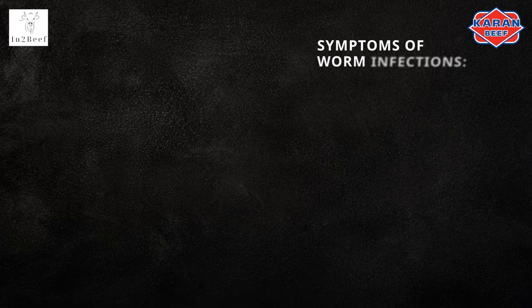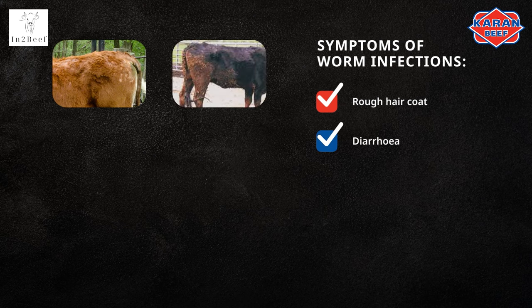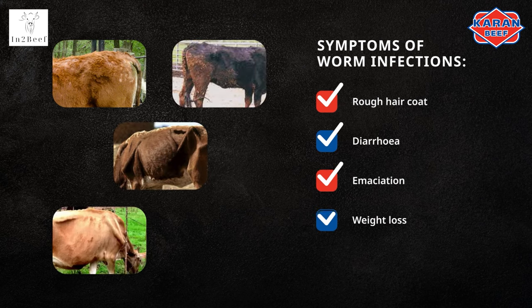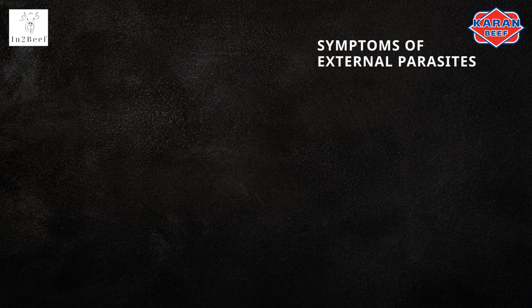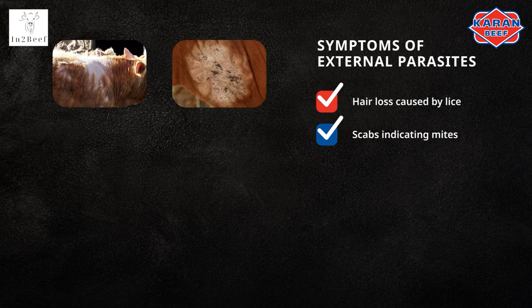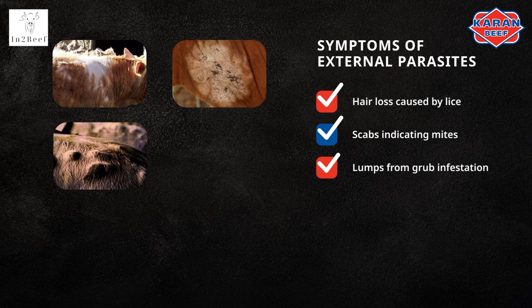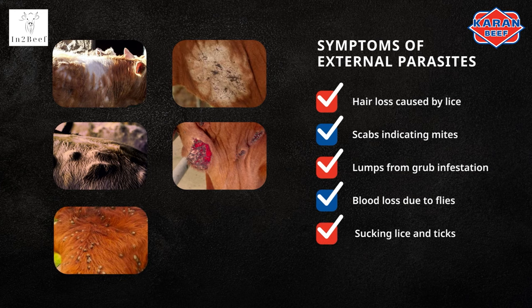Knowing whether your animal has worms or parasites requires identifying the symptoms. General symptoms of worm infections are rough hair coat, diarrhea, emaciation, weight loss, or blood loss. External parasite symptoms are hair loss caused by lice, scabs indicating mites, lumps on the back from grub infestation, blood loss due to flies, sucking lice and ticks, and also weight loss.